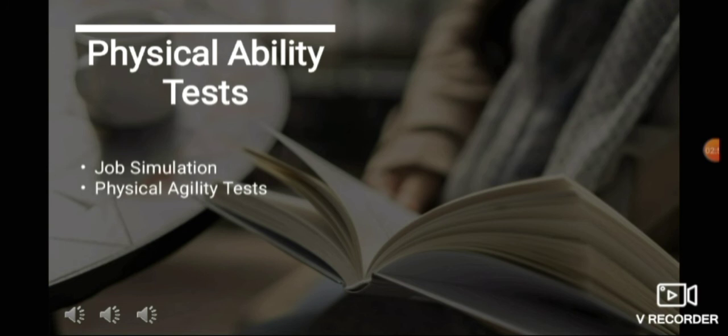For physical agility test, it's usually used in police departments to measure the strength and endurance of an individual. This includes sit-ups, push-ups, 300-meter sprint, 1.5-mile run, vertical jump, weight carry, stationary bike, and ladder climb. So it's very physical in this physical agility test because you need to see if the individual is physically ready for the job they're applying for.